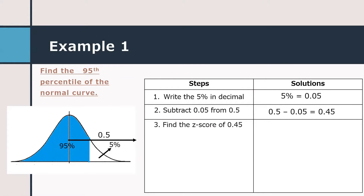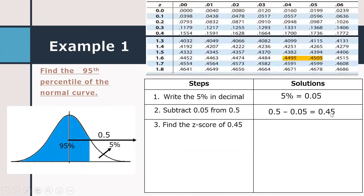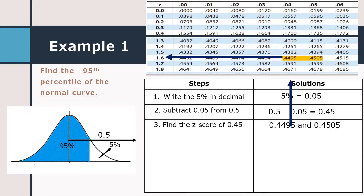The next step is to find the z-score of an area of 0.45 in the standard normal table. That area falls between 0.4495 and 0.4505. The z-score of 0.4495 is 1.64 and the z-score of 0.4505 is 1.65.